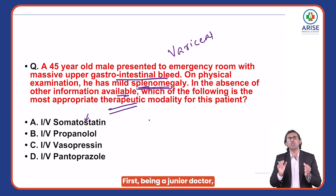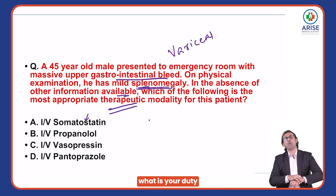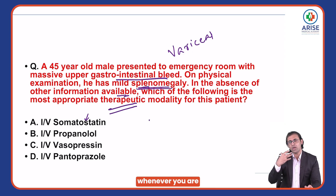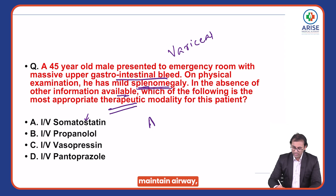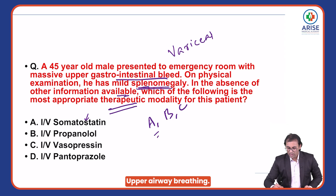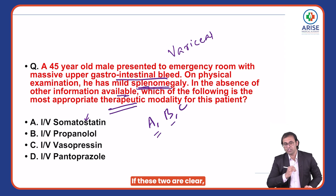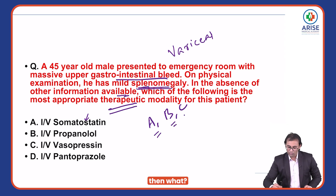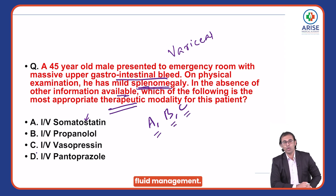First, being a junior doctor, what is your duty? Whenever you are getting a patient in emergency, first of all you have to maintain airway, breathing, and circulation. For upper GI bleed: airway, breathing — if these two are clear, then circulation: IV fluid management.